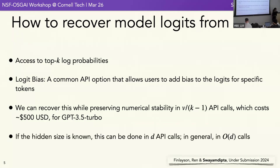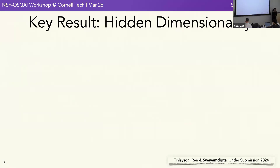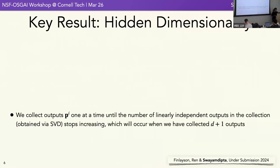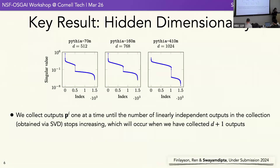If the hidden size is already known to you, you can do everything in about d API calls, which is much less than vocabulary-size calls. One key result is that you can recover the hidden dimensionality of the model: collect output probability vectors one at a time until the number of linearly independent outputs stops increasing, then look at where the singular values start decreasing — that corresponds to the dimensionality. For Pythia models we were able to exactly recover the dimensionality.